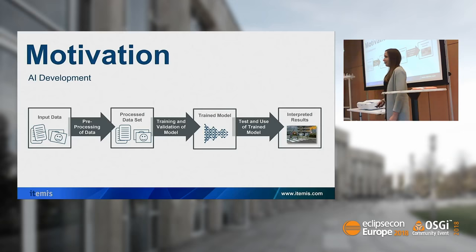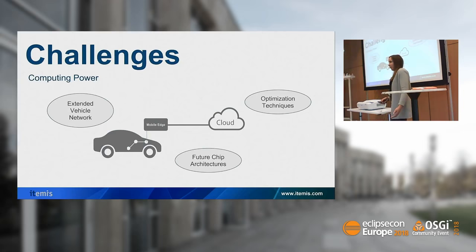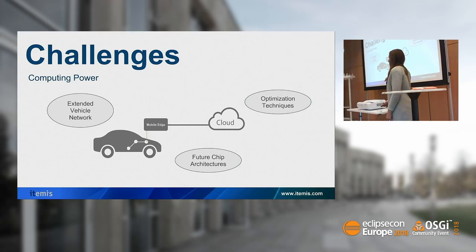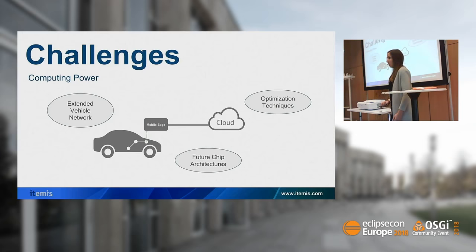This already leads to one of our challenges: computing power. For both development and execution, you need much more computing power than for traditional software components. When training neural networks, you cannot just use a normal laptop — you need a high-performance computer, and therefore need access to those machines. Considering the vehicles themselves, we have to think about new chip architectures and extending the vehicle network to ensure the required performance.